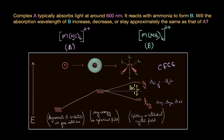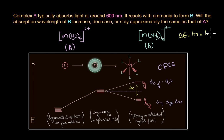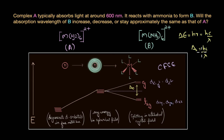Delta naught is essentially the energy difference between the two levels, so we can write this as delta E. We can relate delta E to the absorption wavelength through the classic equation: delta E = hν = hc/λ. So we can write delta naught as hc/λ, and that is how you relate the crystal field splitting energy with the absorption wavelength.